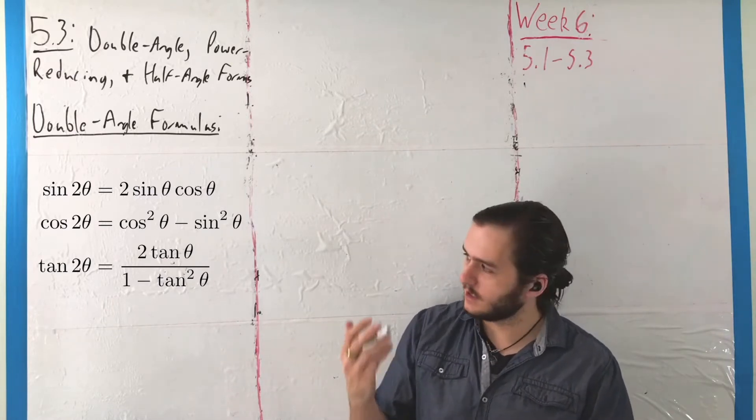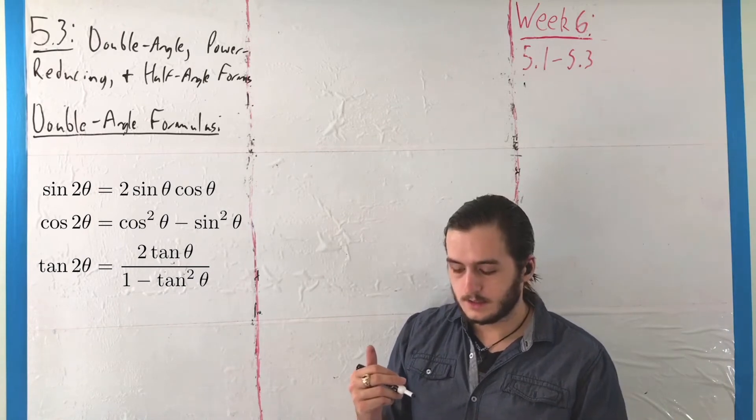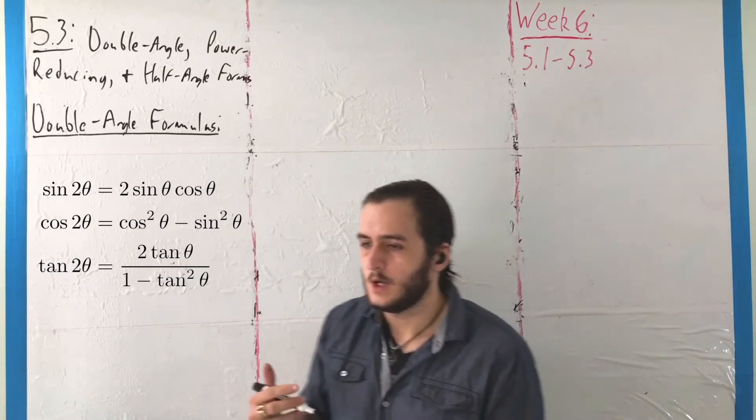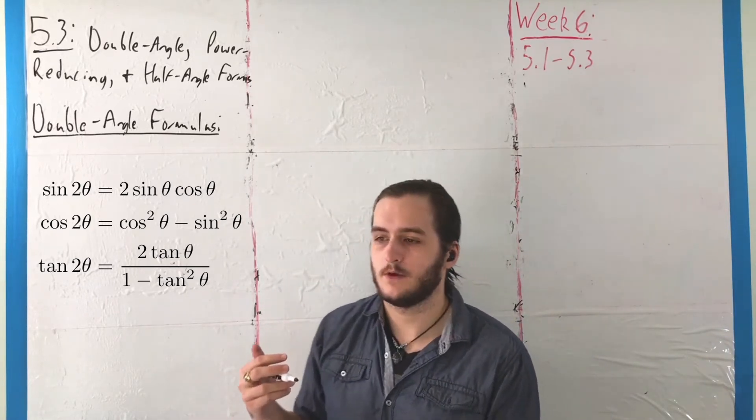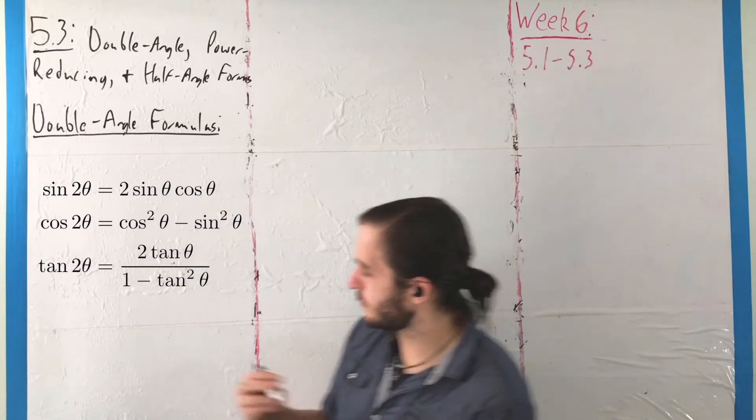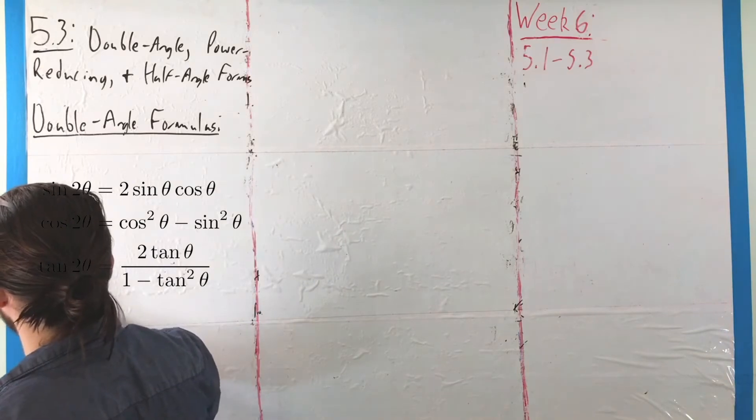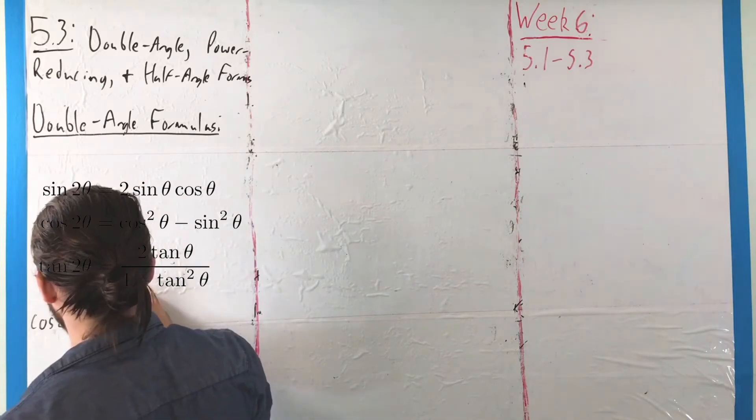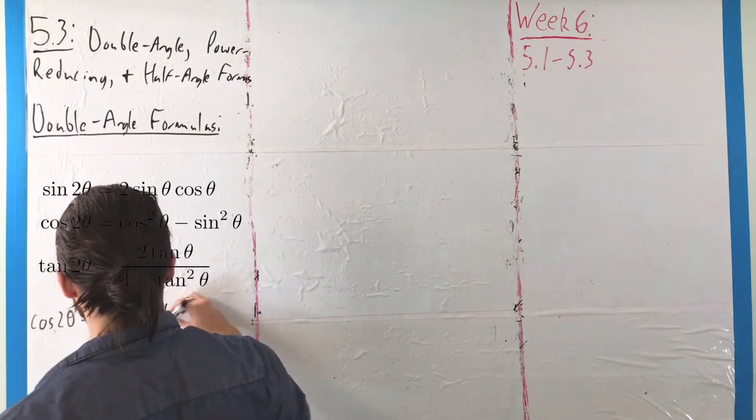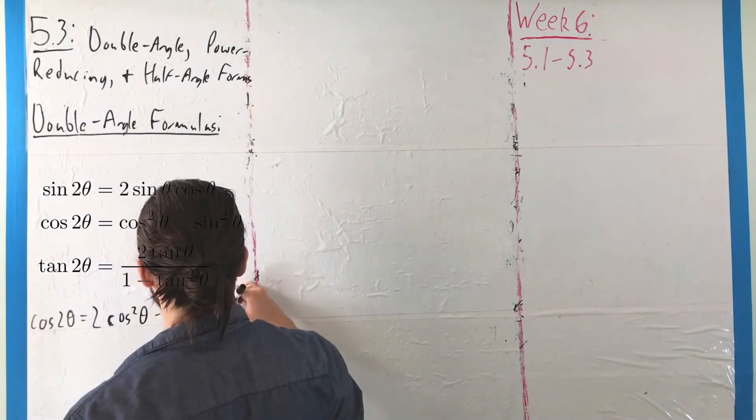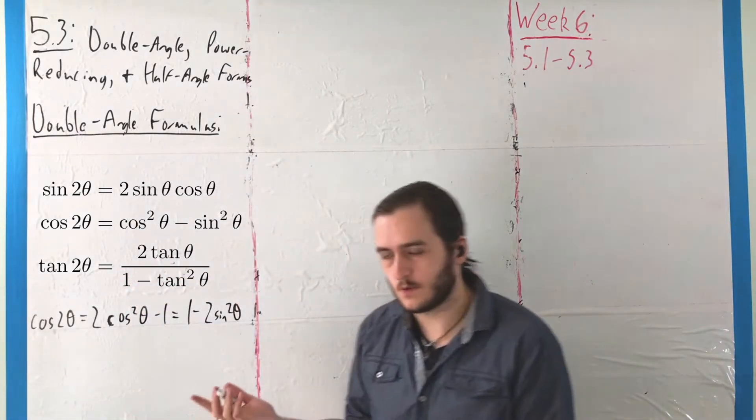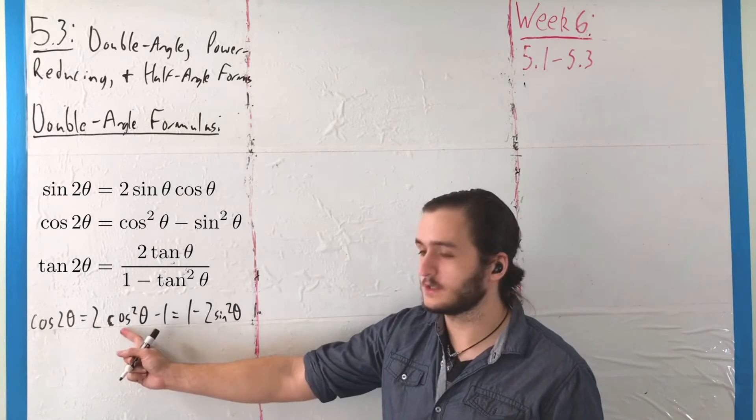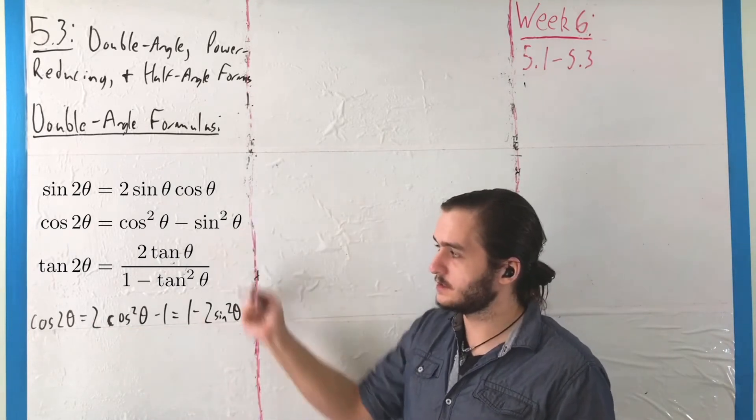Cosine of 2θ is particularly interesting because we can write it in multiple ways. Using the Pythagorean identity, we get two equivalent representations: cosine of 2θ can be written as 2 cosine squared θ minus 1, or 1 minus 2 sine squared θ, depending on our preference. All we do is remember that cosine squared plus sine squared equals 1, rearrange to get something in terms of cosines or sines, and this transforms accordingly.